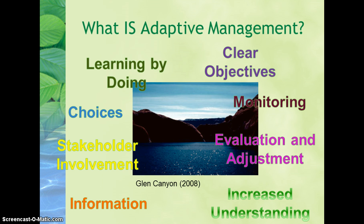Instead, adaptive management is implementing management actions and adjusting them based on what is learned. Adaptive management reduces uncertainty about the effect of management actions on the resources, and improves future management actions as a result of this increased understanding. Within the framework of adaptive management, choices are available, there is an opportunity to apply learning, management objectives can be clearly identified, and the value of information is high and considered worth the cost.